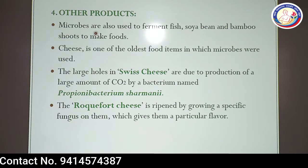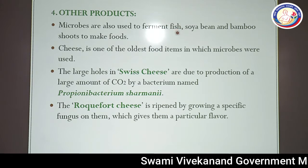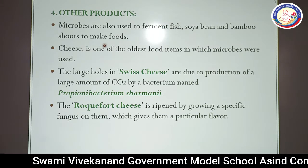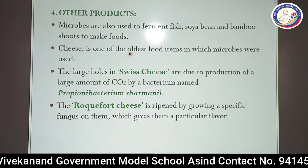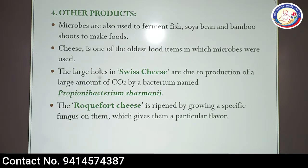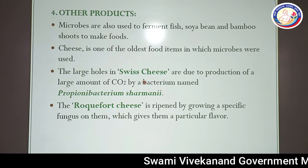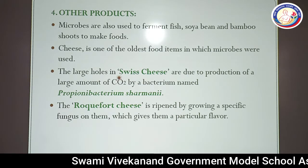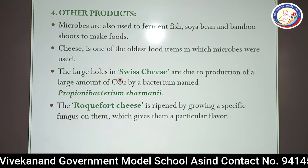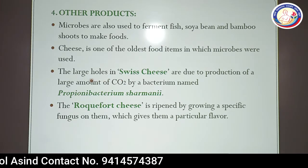Microbes are also used to ferment fish, soya, bamboo shoots to make various foods. Cheese is one of the oldest food items in which microbes were used. The large holes in Swiss cheese are due to production of a large amount of CO₂ by the bacterium Propionibacterium sharmanii.